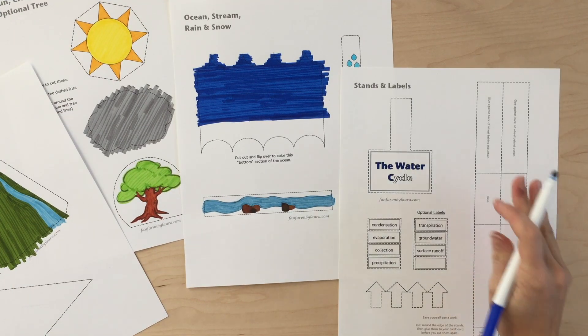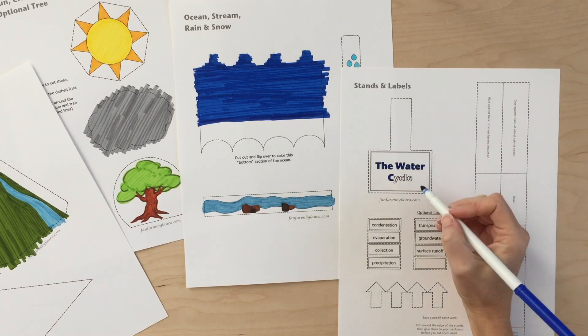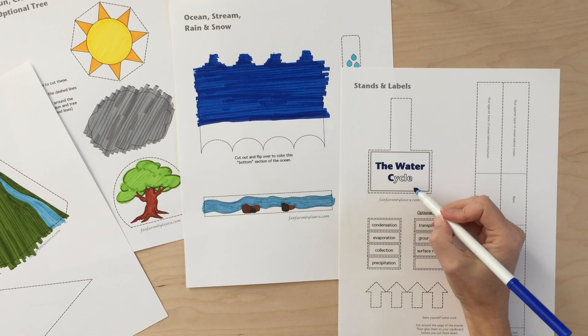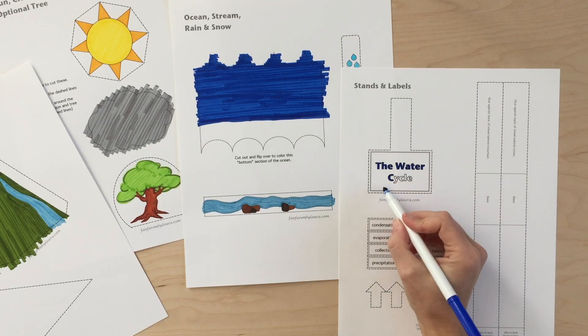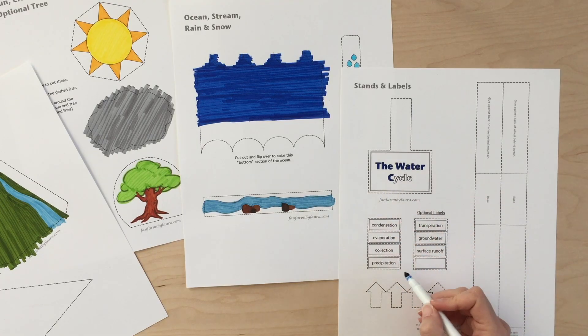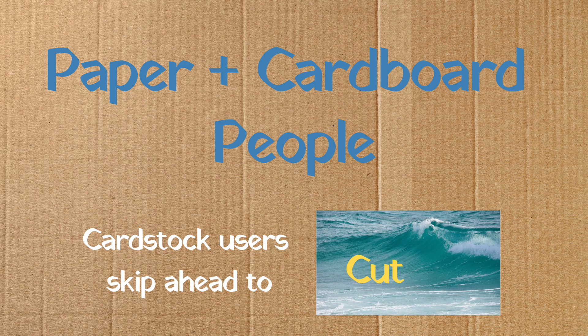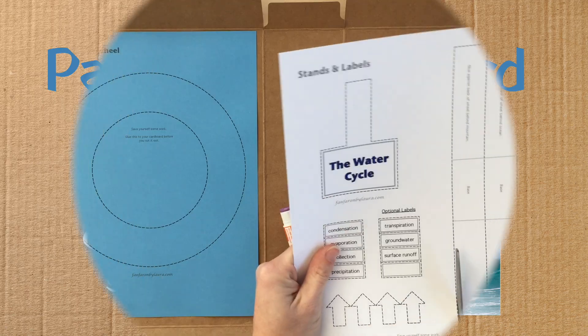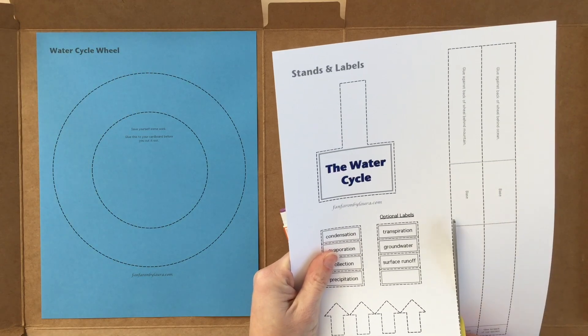You can color as much or as little as you'd like on this page. Don't color the stands. You won't see them. I've been coloring the letters right here in the title. You might want to write your name right here. You can choose to color the labels or the arrows if you'd like, or you can skip it.